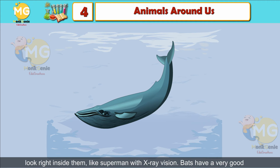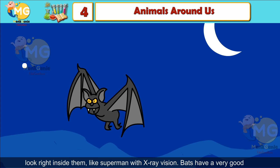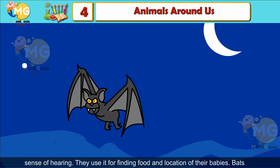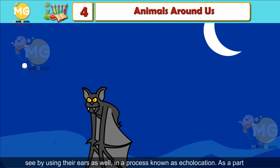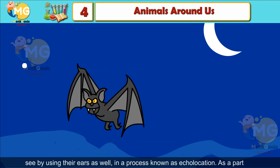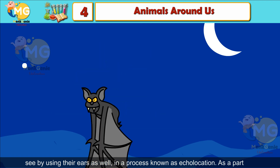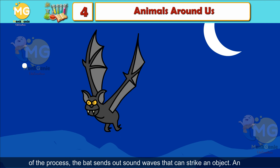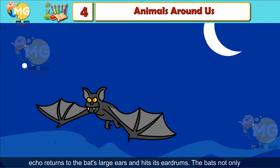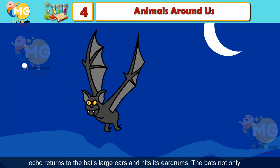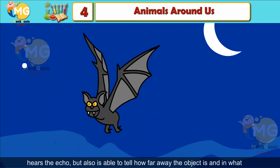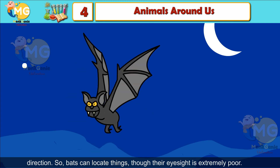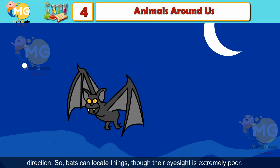Bats have a very good sense of hearing. They use it for finding food and locating their babies. Bats 'see' by using their ears in a process known as echolocation. The bat sends out sound waves that strike an object, and the echo returns to the bat's large ears and hits its eardrums. The bat not only hears this echo but is also able to tell how far away the object is and in what direction.